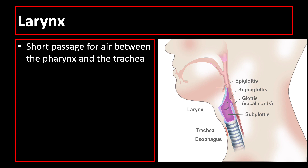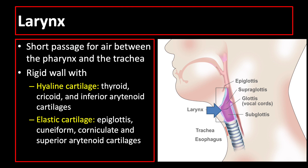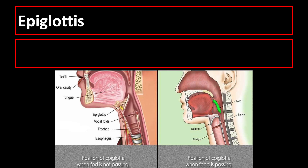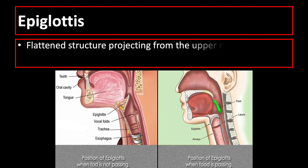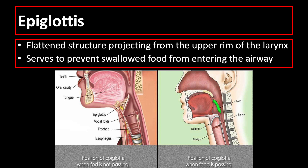The next organ we will discuss is the larynx, which is a short passage for air between the pharynx and the trachea. It has a rigid wall with hyaline cartilage and elastic cartilage. At the top of the larynx is the epiglottis, a flattened structure projecting from the upper rim of the larynx that serves to prevent swallowed food from entering the airway. It opens when you breathe and closes when you swallow food so that food passes through the esophagus instead of accidentally entering the airway.